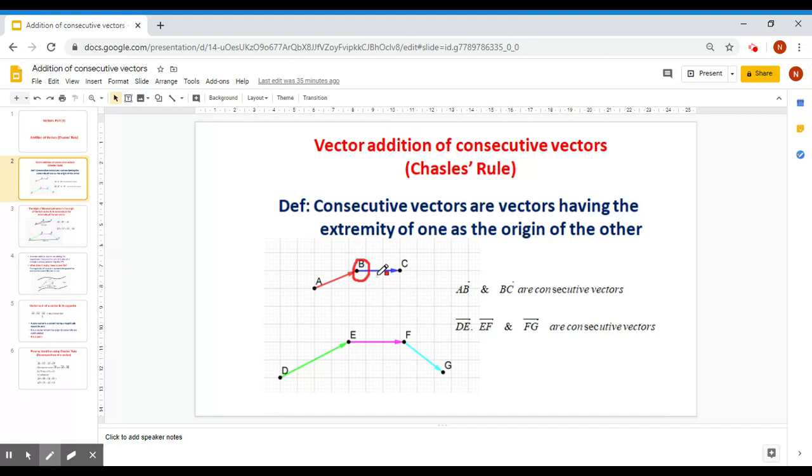So AB and BC are consecutive vectors. Another example: DE, EF, and FG are consecutive vectors.